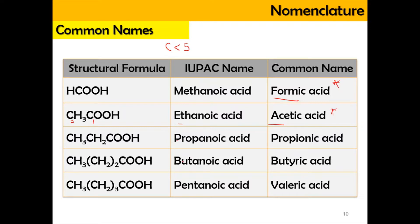For 3 and 4 carbons, the common names are quite similar to the IUPAC names. For example, propanoic acid has the common name propanoic acid, and for butanoic acid, the common name is butyric acid. Meanwhile, for pentanoic acid, the common name is valeric acid — the 'V' here refers to the Roman numeral 5, since penta refers to number 5.